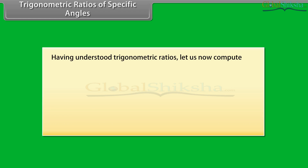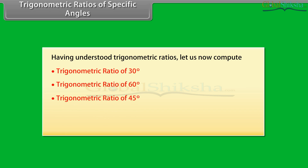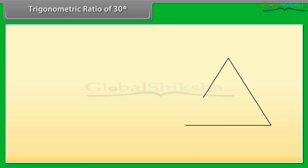Having understood trigonometric ratios, let us now compute the trigonometric ratios of 30 degrees, 60 degrees, 45 degrees, 0 degrees, and 90 degrees. Trigonometric ratio of 30 degrees: consider the equilateral triangle XYZ, where XY equals YZ equals XZ equals S, and angle X equals angle Y equals angle Z.